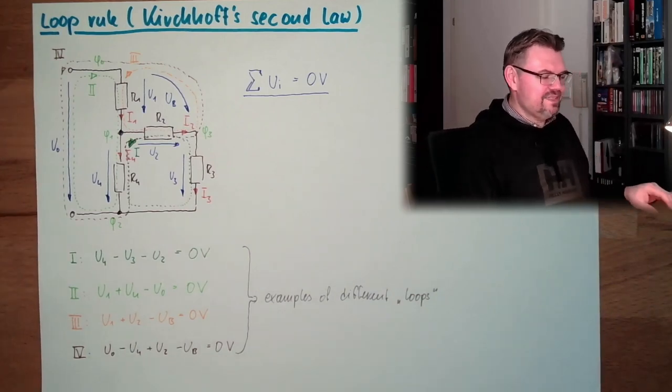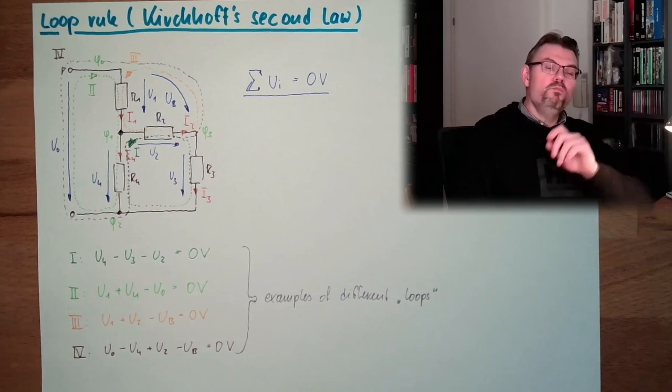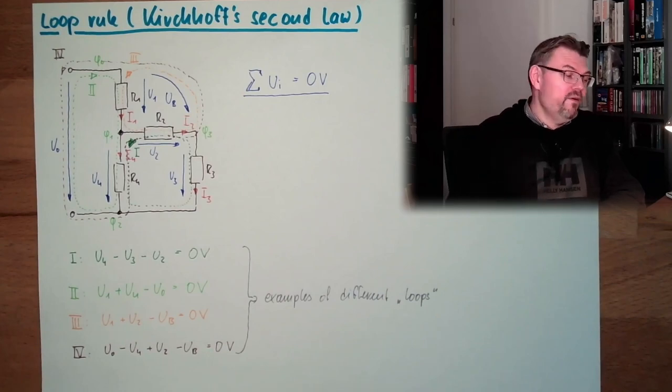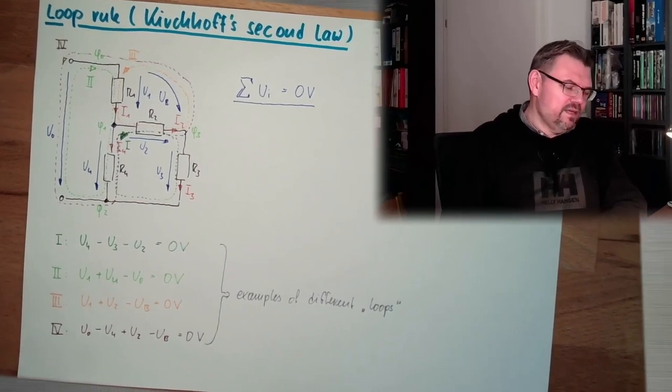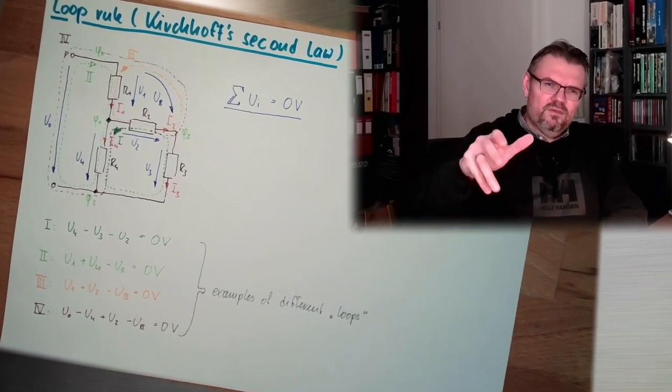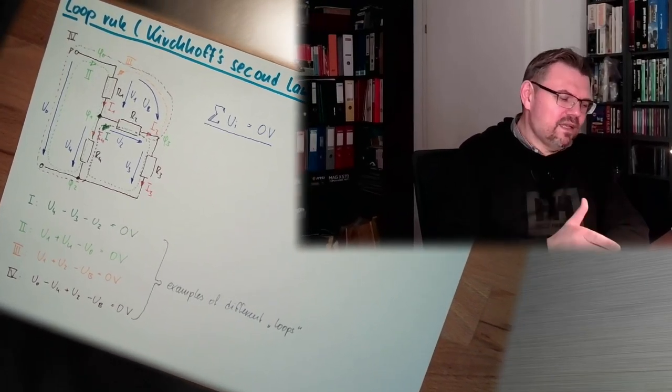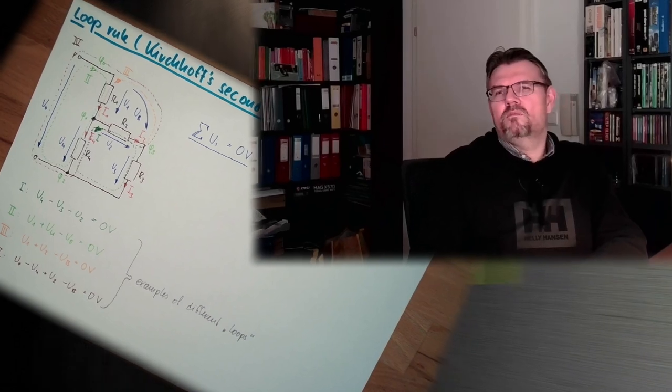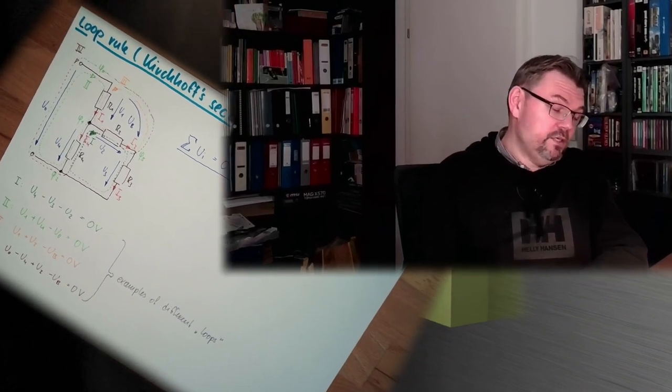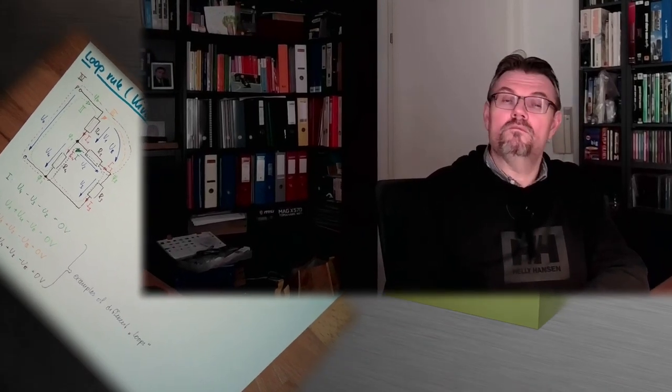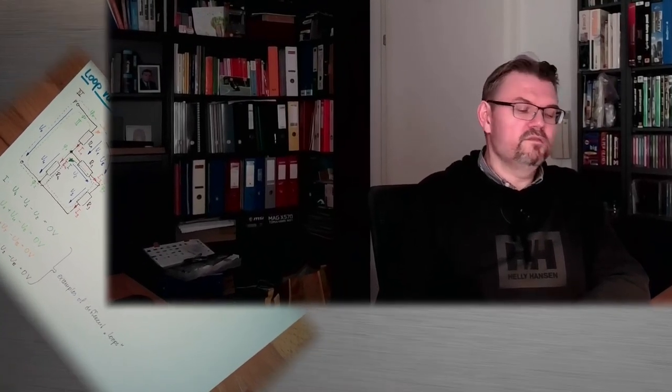That's Kirchhoff's second law, loop rule. Basically it says between here and here there's no voltage difference. Like I said, when there are changing magnetic fields involved then this is not exact. We will extend this afterwards with the law of induction, but for us now that's it. We are not talking about magnetic fields and not changing magnetic fields up to now. Loop rule, Kirchhoff's second law.